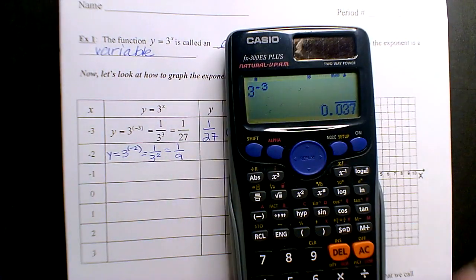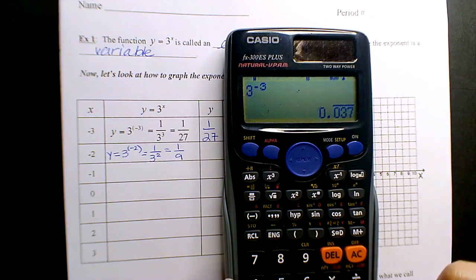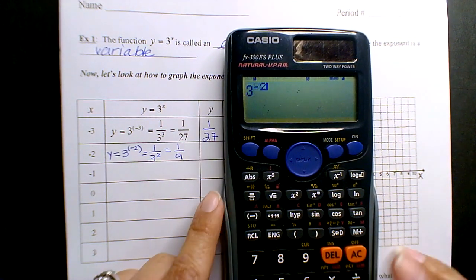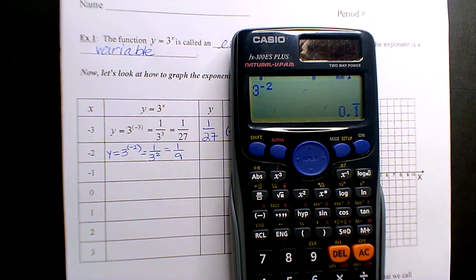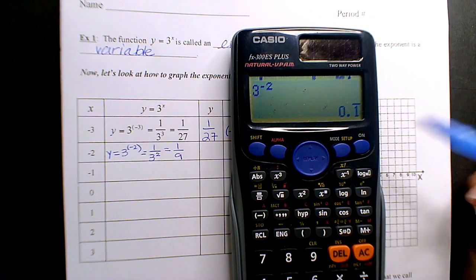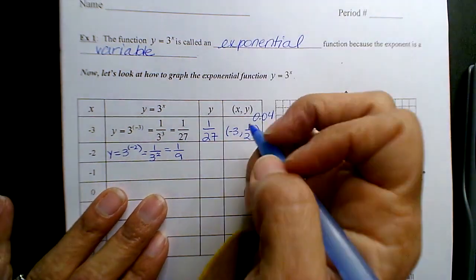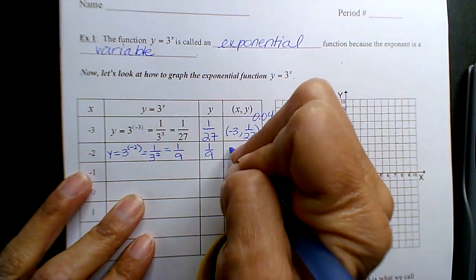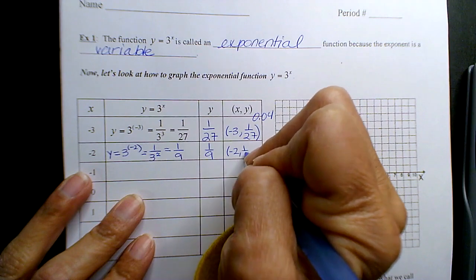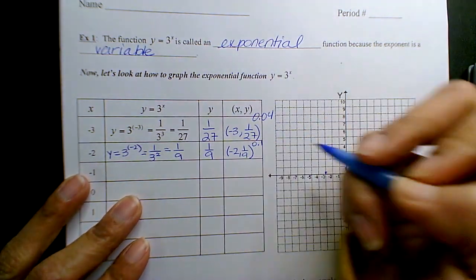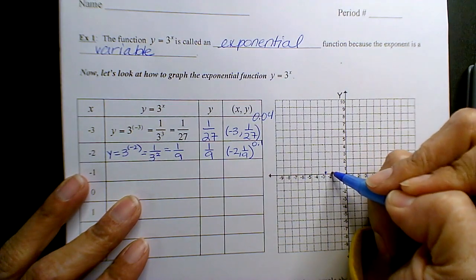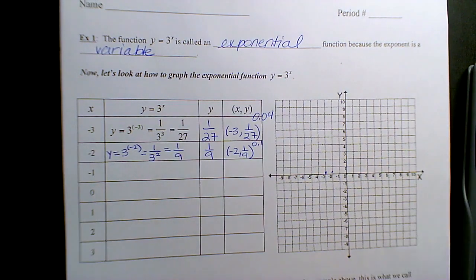If you put it in the calculator, 3 exponent negative 2, there's my 1 ninth. And if I want the decimal so I can plot it, it's 0.1. So my point is negative 2, 1 ninth or 0.1.